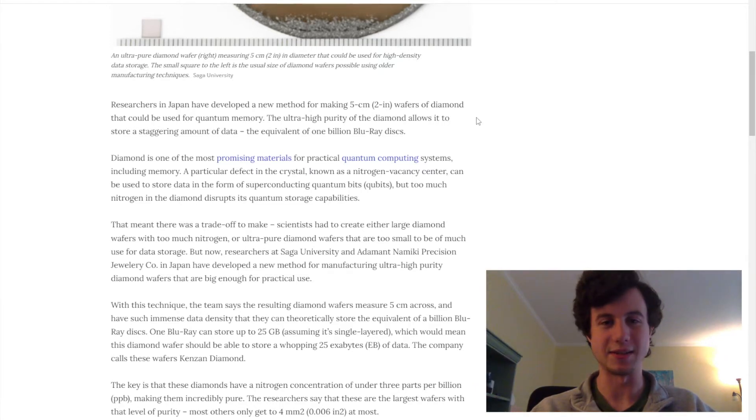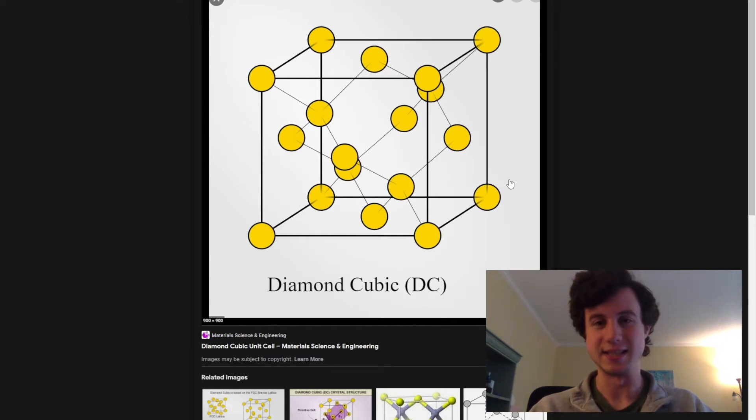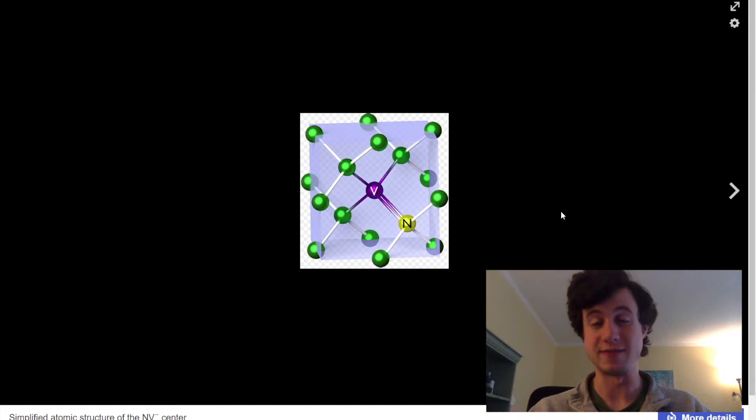The actual technology that allows them to store information on a diamond wafer is through the use of something called a nitrogen vacancy center. If you look at the structure of a diamond, you can see it's made up of these individual carbon atoms that are linked in this repeating structure. And in the case of a nitrogen vacancy center, see in this picture, there are two carbon atoms missing. One of them is replaced with the nitrogen and the other is a vacancy, which isn't too important for understanding this.